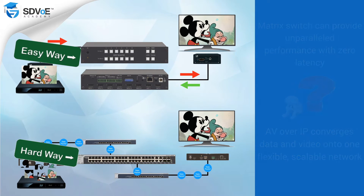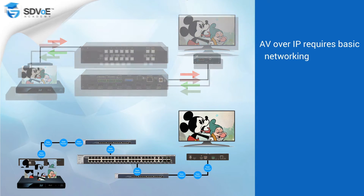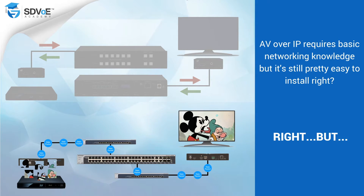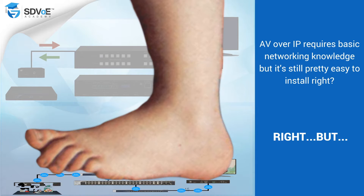AV over IP does require a basic knowledge of networking. But even then, we face the dilemma of compromise. If our existing 1 gig network is already being used for data, then surely by adding video to it, regardless of how much that video is compressed, we are compromising the performances of both the video and the data.